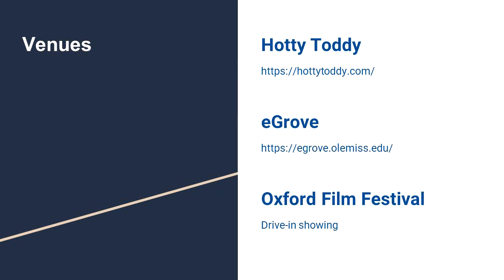The Oxford to the Ballot Box project coordinators have made agreements with folks that run different online venues on or related to the university, such as Hotty Toddy, eGrove, and the Oxford Film Festival. Each venue has expressed interest in hosting and publicizing some of the student work created through our assignments. Hotty Toddy will feature some multimodal and alphabetic texts on their website; eGrove will add student work to the University of Mississippi Library's institutional repository; and the Oxford Film Festival will host a drive-in screening for student films and videos.